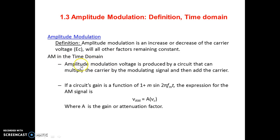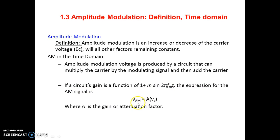In the time domain, the AM voltage is produced by a circuit that multiplies the carrier by the modulating signal and then adds the carrier. If the circuit gain is a function of (1 + m·sin(2π·f_m·t)), the expression for the AM signal is V_am = V_c multiplied by that gain — we are simply multiplying the gain of the circuit with the carrier voltage V_c.